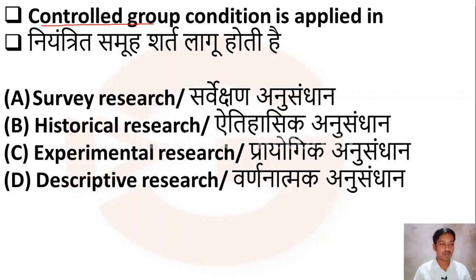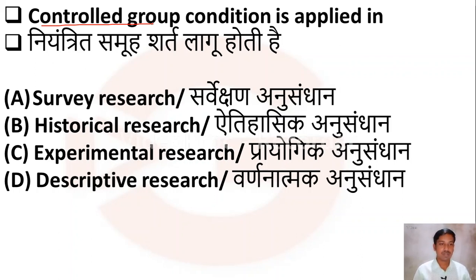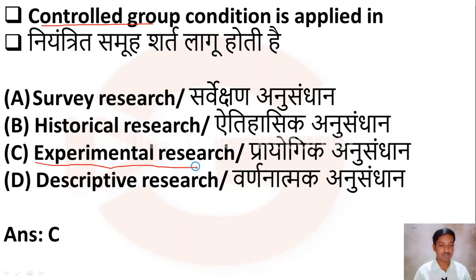The next question: control group condition is applied in which type of research? Option A: survey research, Option B: historical research, Option C: experimental research, Option D: descriptive research. The control group condition is applied in experimental research, so Option C is the right answer.